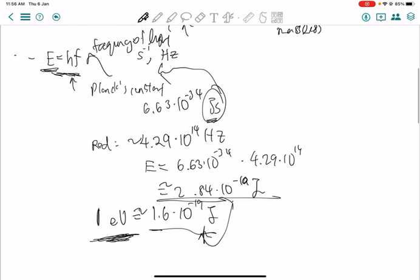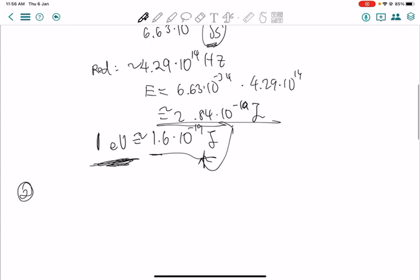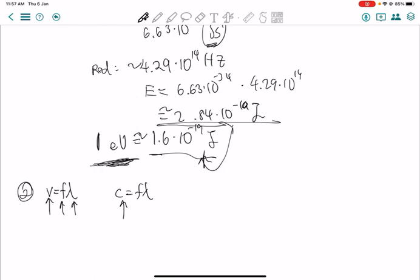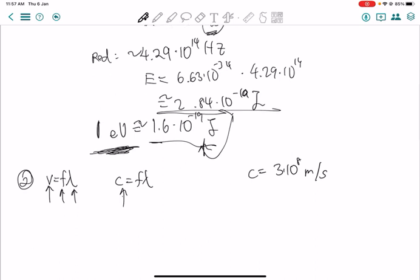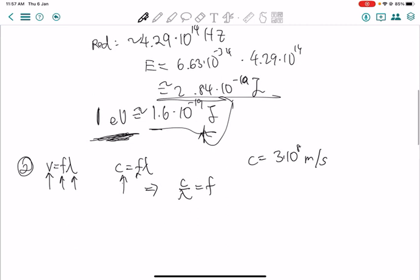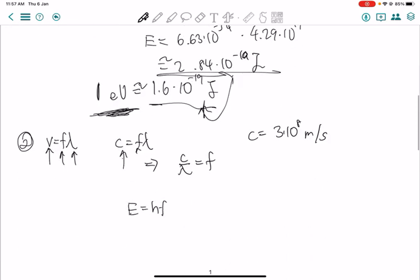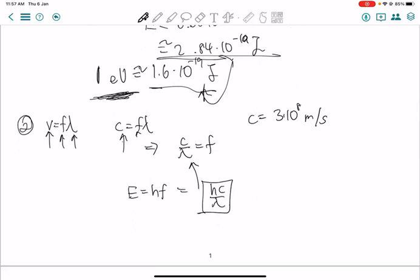That's the first formula, E equals HF. There is a second formula that comes from things you already know. We know V equals F lambda. This frequency, this wavelength, and V. For light, it's C equals F lambda, because there is a standard notation for the speed of light. C is 3 times 10 to the power 8 meters per second. Now you can take this and rearrange it in terms of frequency. So you get C over lambda equals F. Take back your E equals HF, and then you can substitute this in. HC over lambda.